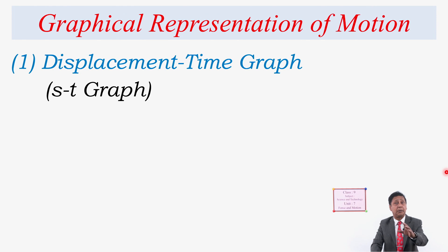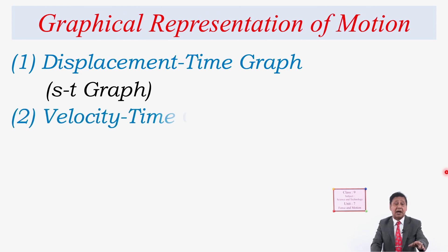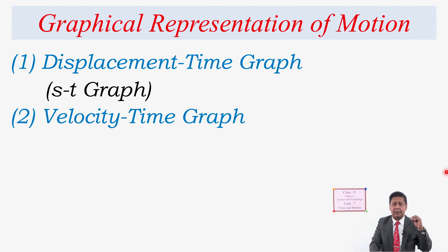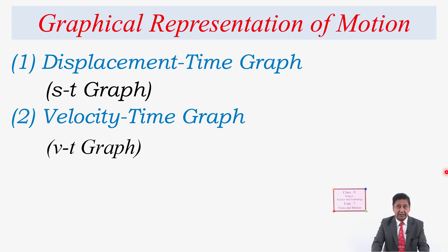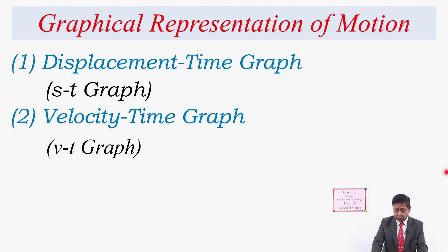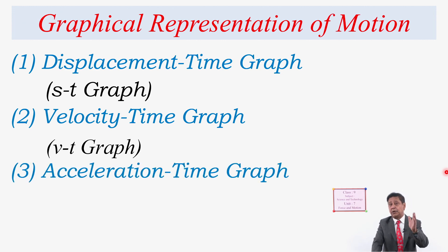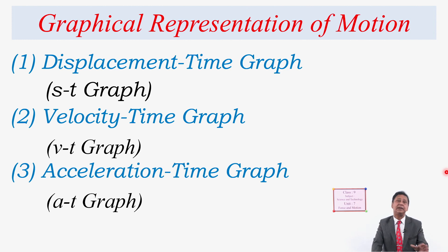In the same way, the motion of a body can also be represented by a velocity-time graph, or V-T graph, where V means velocity and T means time. There is also a third method: the acceleration-time graph, or A-T graph. By an A-T graph also, the motion of the body can be represented.